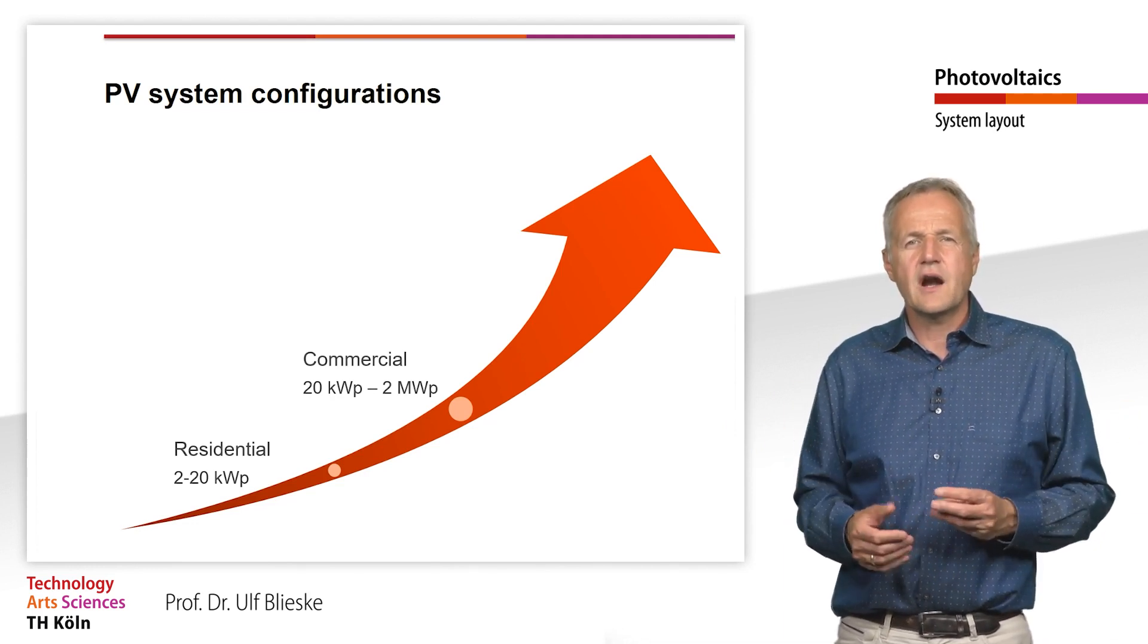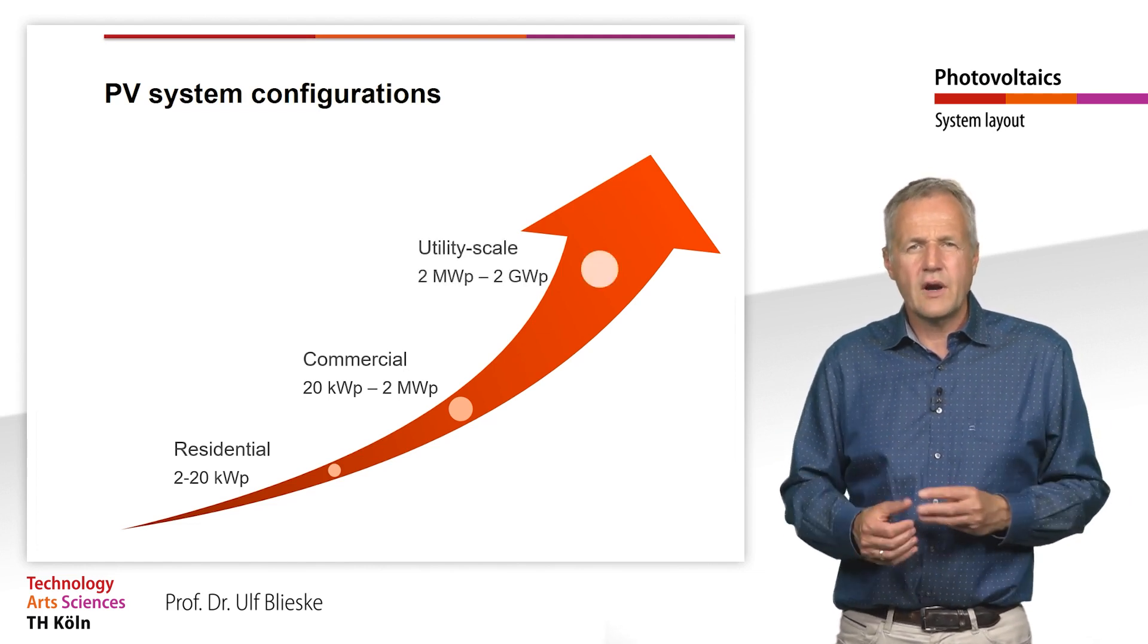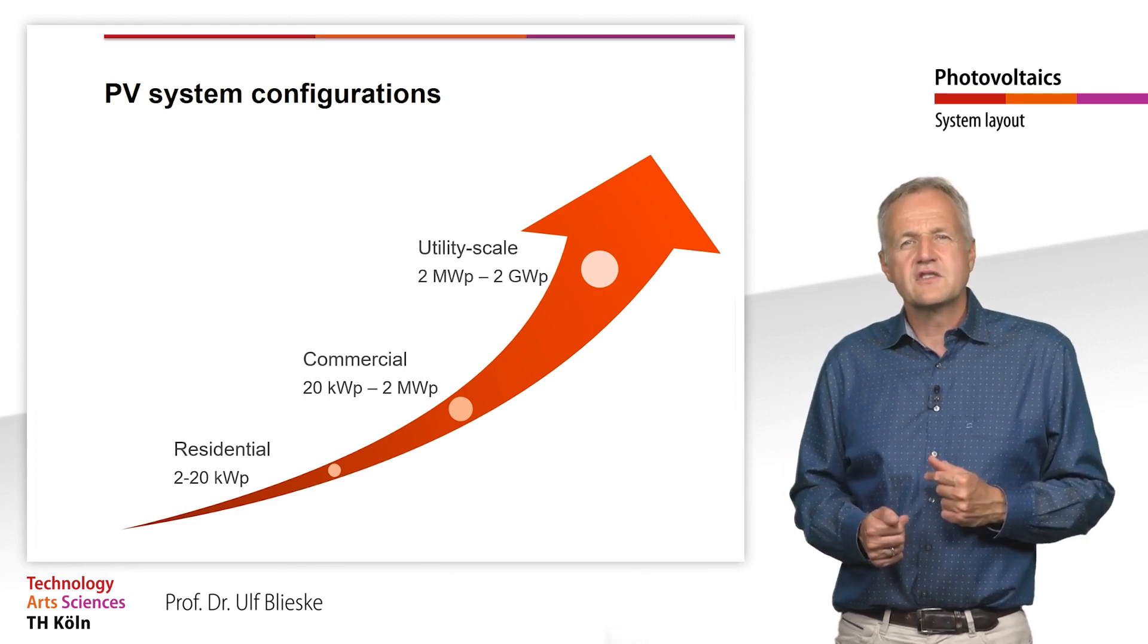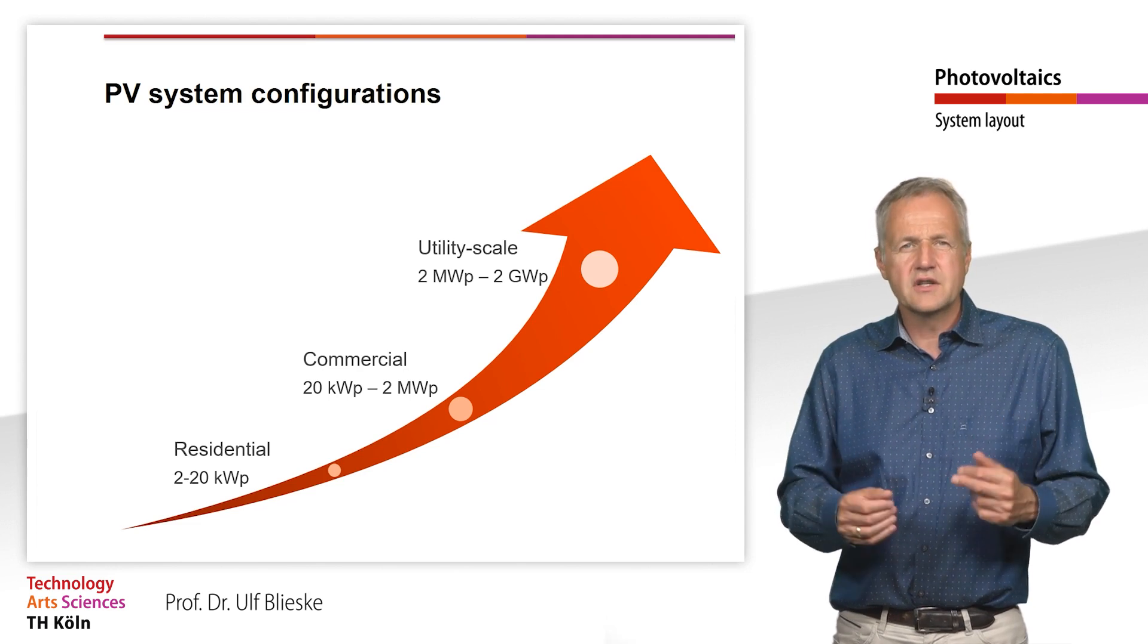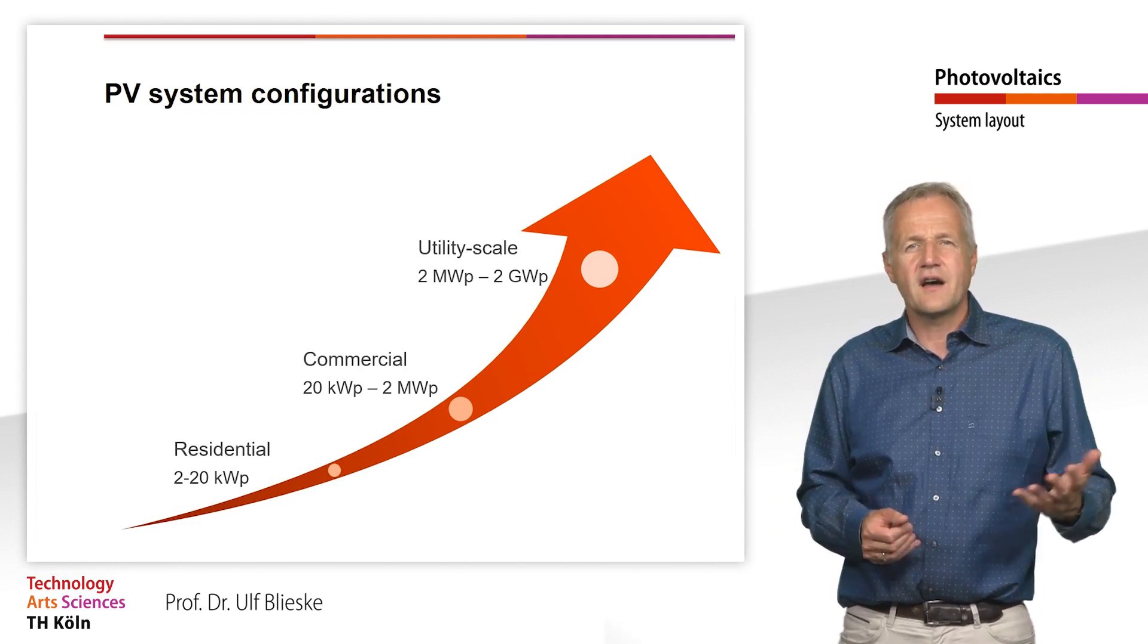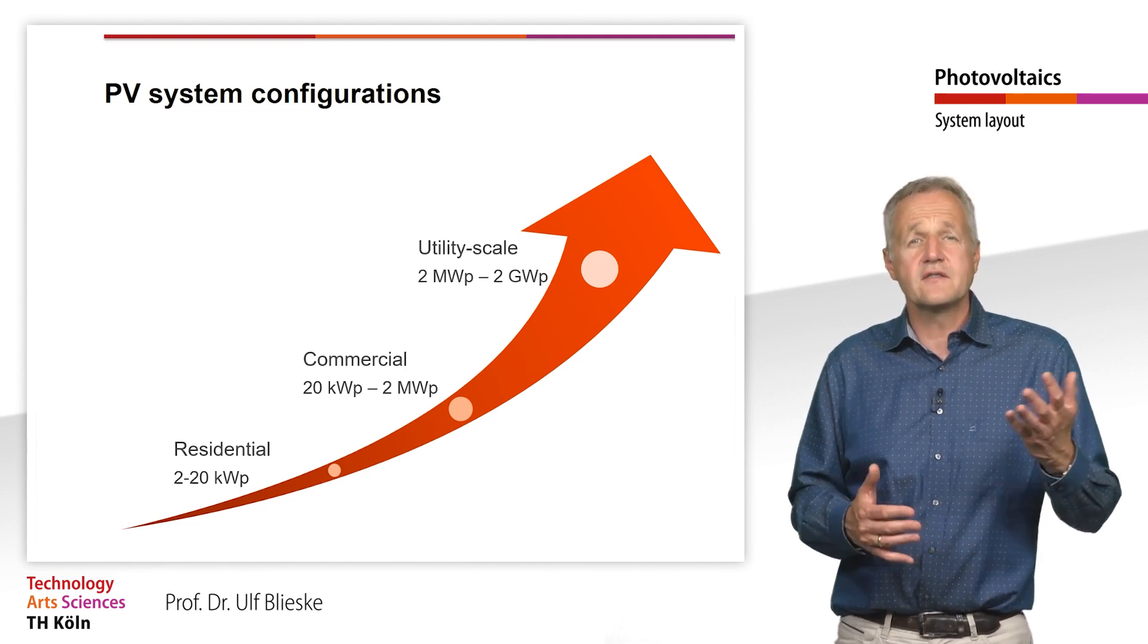The largest plants are ground-mounted PV systems. Of course, there are also small ground-mounted PV systems, but for the larger solar parks, the size ranges today from several MW to several GW. In practice, plant size is a crucial factor in choosing a PV system design, but it is not the only one.